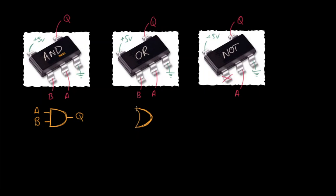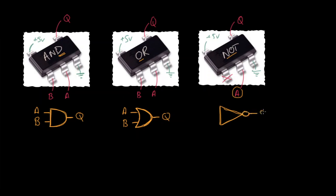For an OR gate, the symbol is a little bit pointier and has a curved back — not a straight back like the AND gate. You remember it because it's not a capital D, and the O in OR is also curved. It has output Q and normally two inputs. The NOT gate is completely different: it's a triangle with a little circle on the right-hand side where the output Q comes out, and input A on the left. The labels A, B, Q are conventional but you can use whatever letters you like.